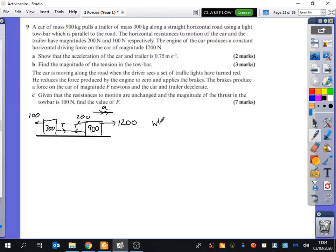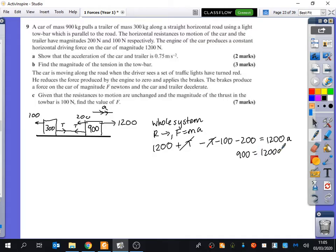The first thing I'll do is have a look at the whole system. I'm going to resolve going to the right and use F equals MA. So I get 1,200 plus T minus T minus 100 minus 200 equals the total mass, which is 1,200, times the acceleration. These cancel, so you get 900 equals 1,200A. So the acceleration is 0.75, as they wanted us to show.